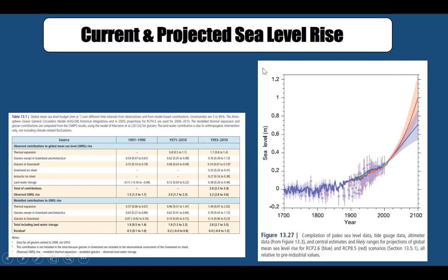Looking at current and projected sea level rise, thermal expansion has by far been the most dominant contributor, followed by glaciers — except in Greenland and Antarctica, which are melting so fast they're leading to significant sea level rise. Adding all of these up gives approximately 2.8 millimeters per year of sea level rise.